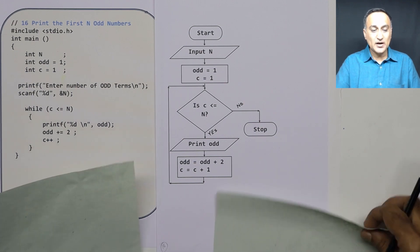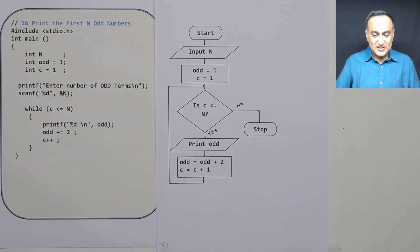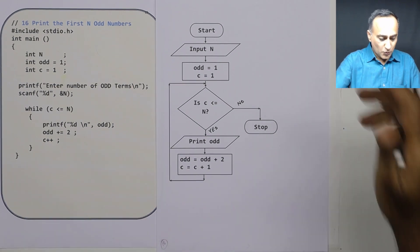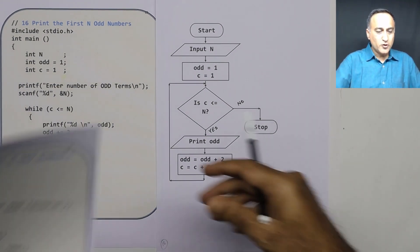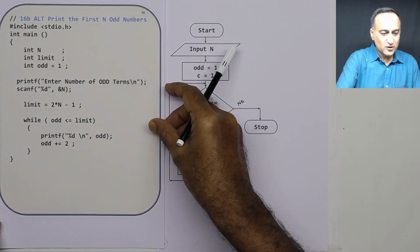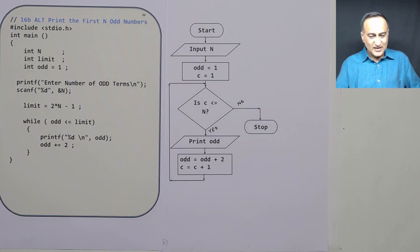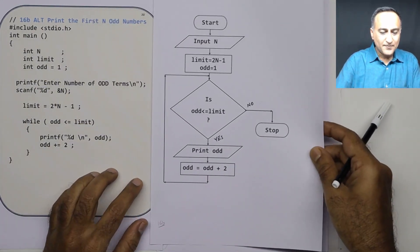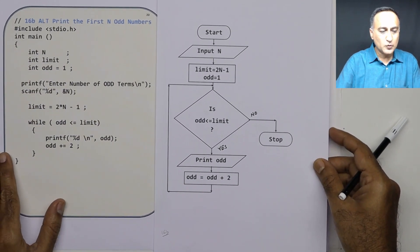So this was one way of printing the first n odd numbers. Now we shall take an alternative approach. Let us first take a look at the flowchart to get clarity, and then we will go with the program.